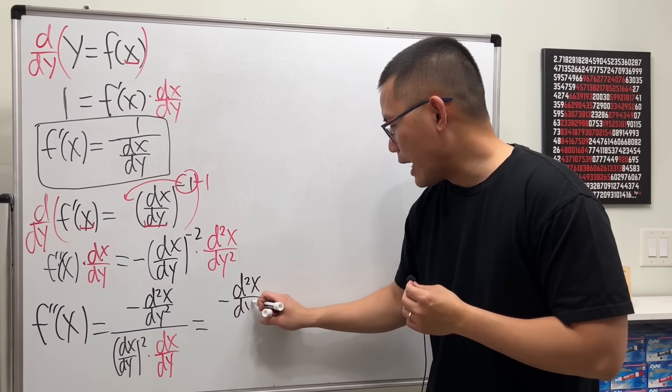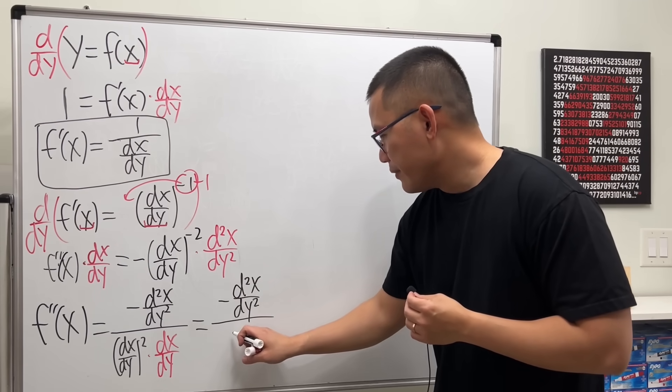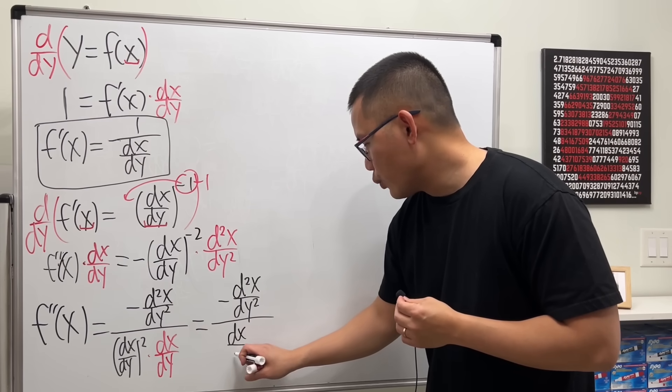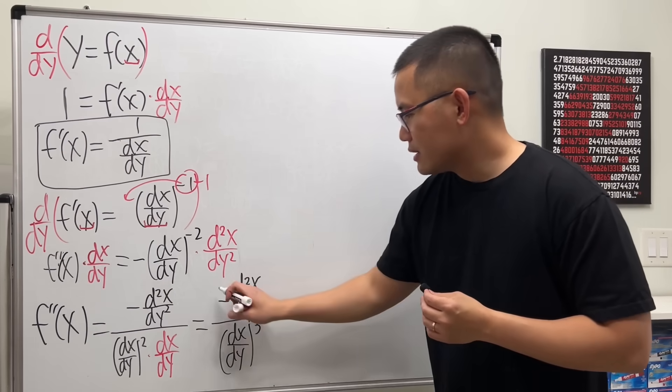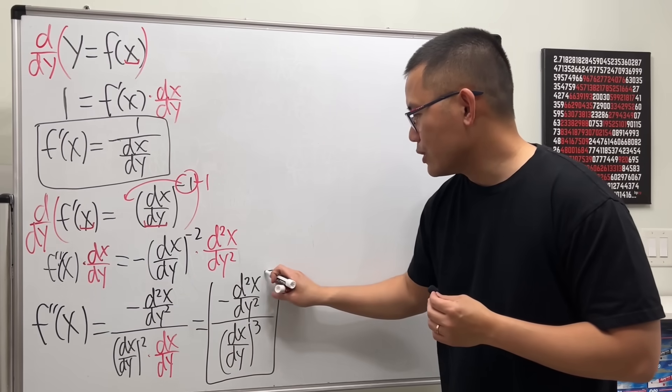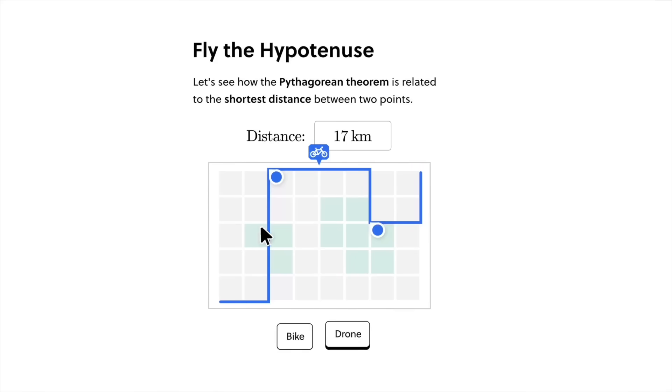So f double prime is equal to negative the second derivative of x with respect to y over the first derivative of x with respect to y, but then you raise that to the third power. So this right here is the result once we get to the second derivative.